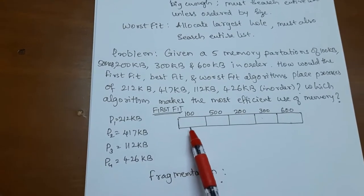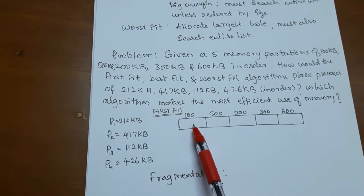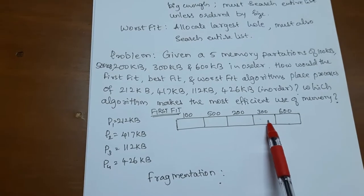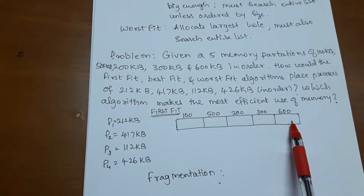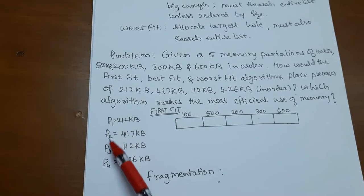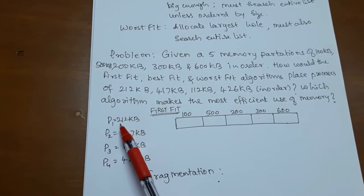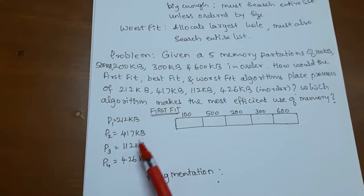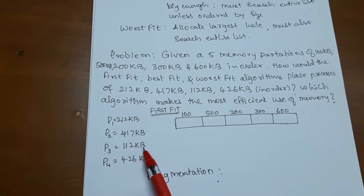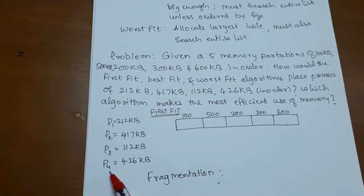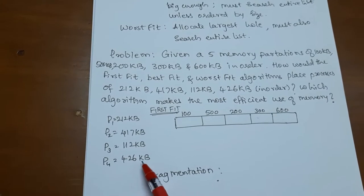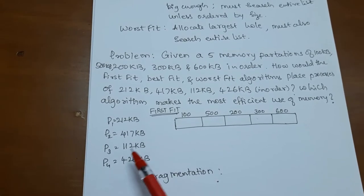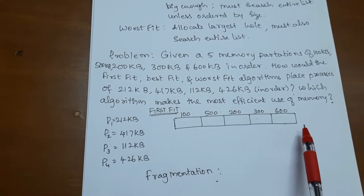The given five memory partitions are of size 100 KB, 500 KB, 200 KB, 300 KB, and 600 KB. The incoming four processes are P1 of size 200 KB, P2 of size 417 KB, P3 of size 112 KB, and P4 of size 426 KB. Now we have to allocate these processes to these memory partitions.